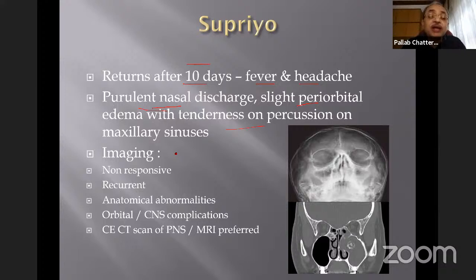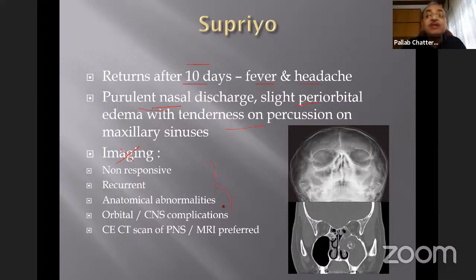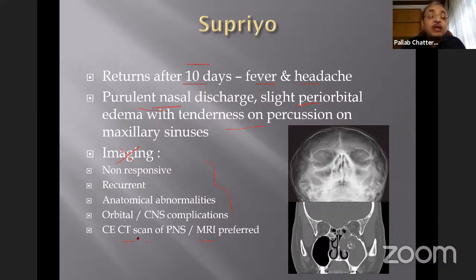Imaging is not required to diagnose sinusitis. Indications for imaging are: non-responsive sinusitis, recurrent sinusitis, suspected anatomical abnormalities, and orbital or CNS complications. In these four cases, a limited-cut CT scan of the paranasal sinuses is good enough. If you want to avoid radiation, MRI is an alternative. Routine CT scanning is not required and can be difficult to interpret due to mucosal thickening.